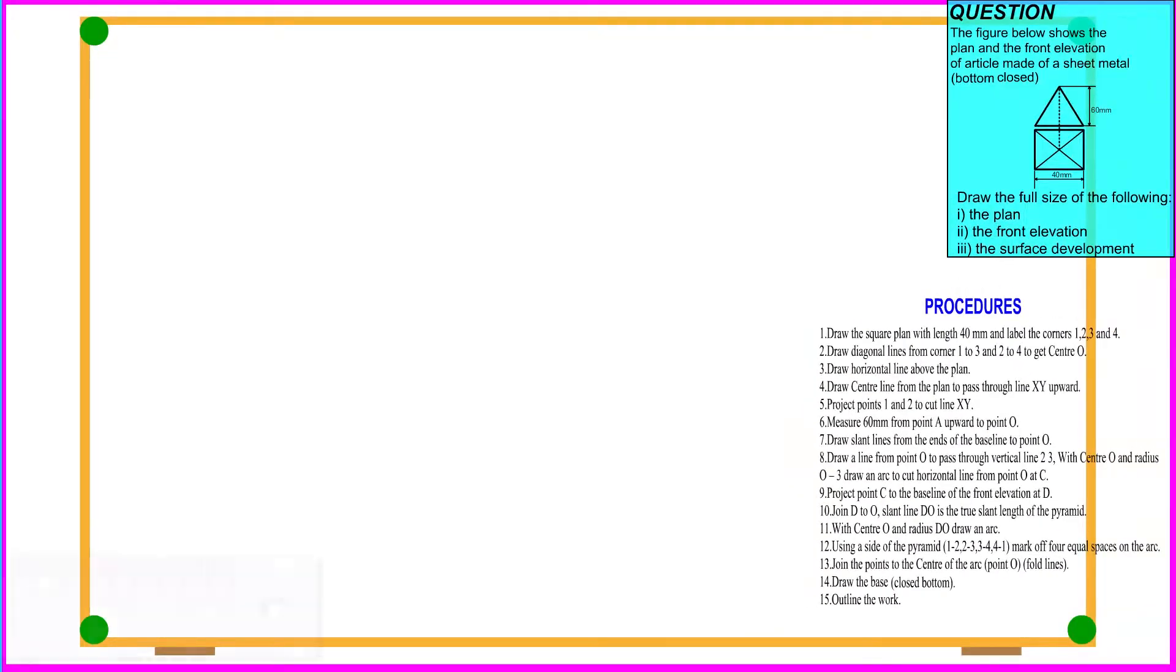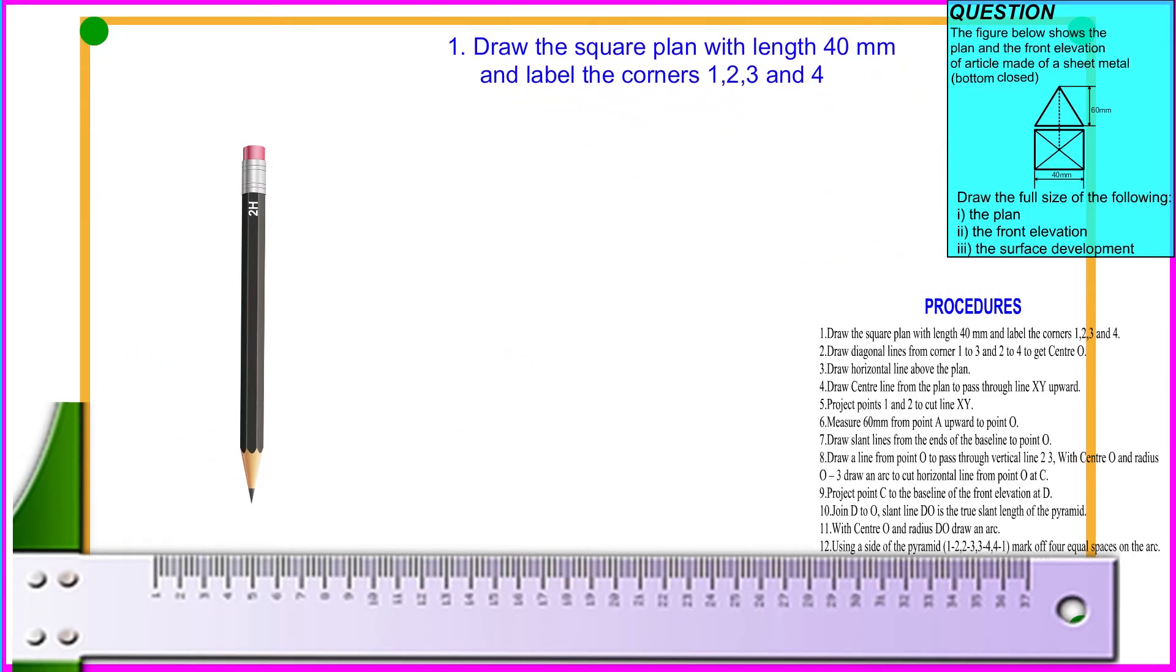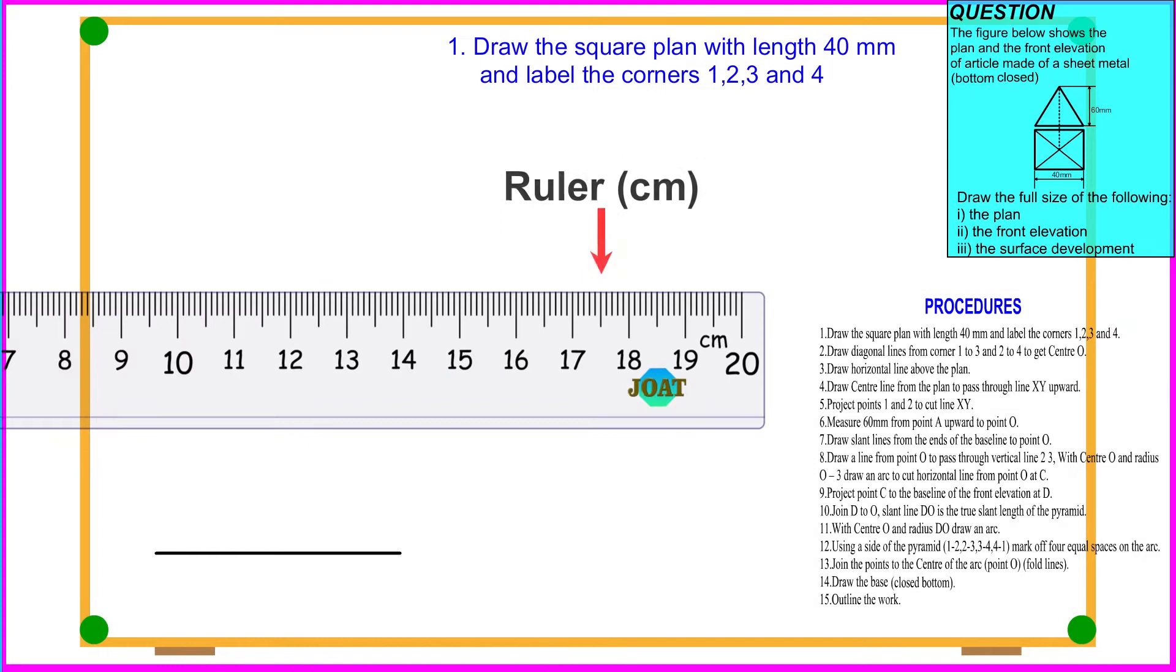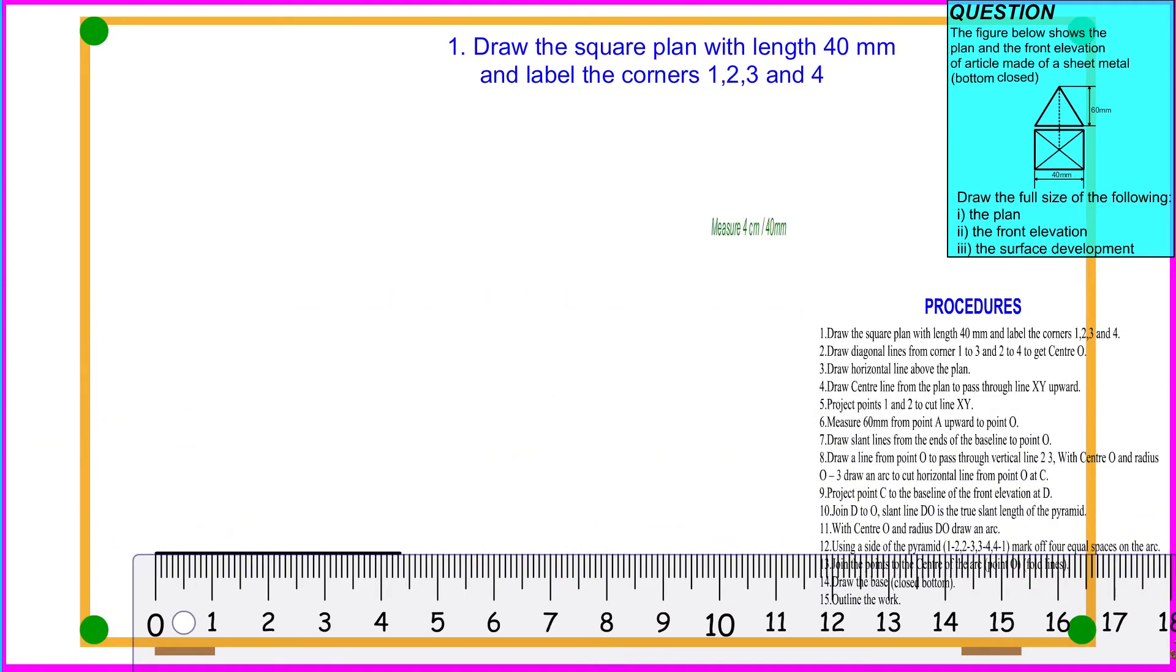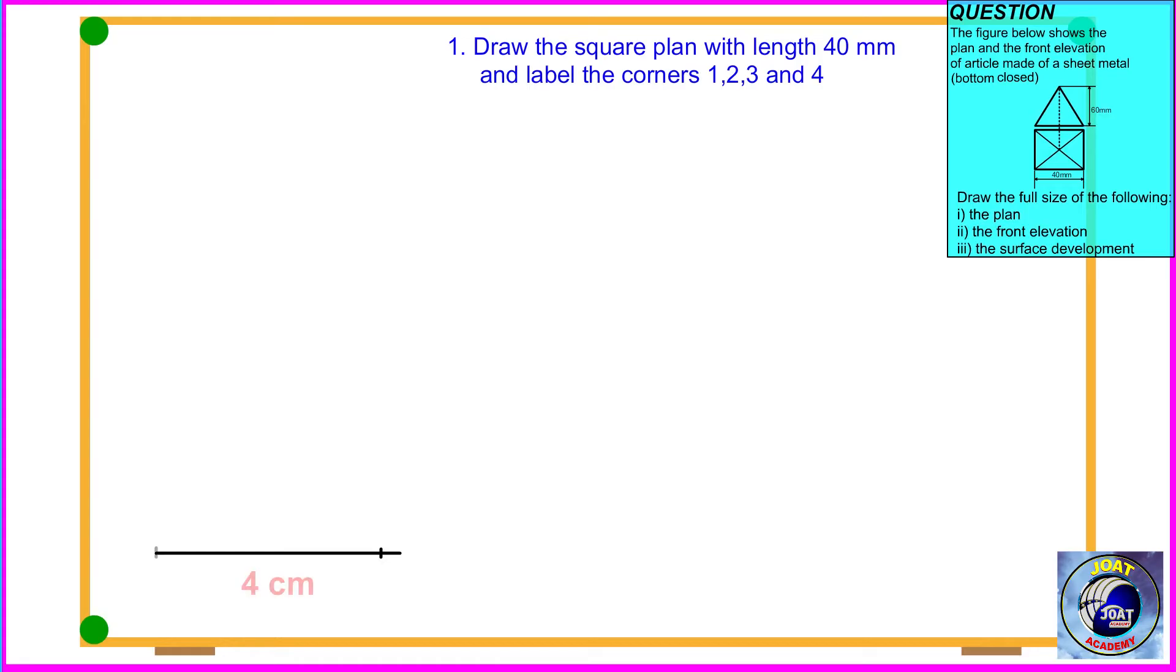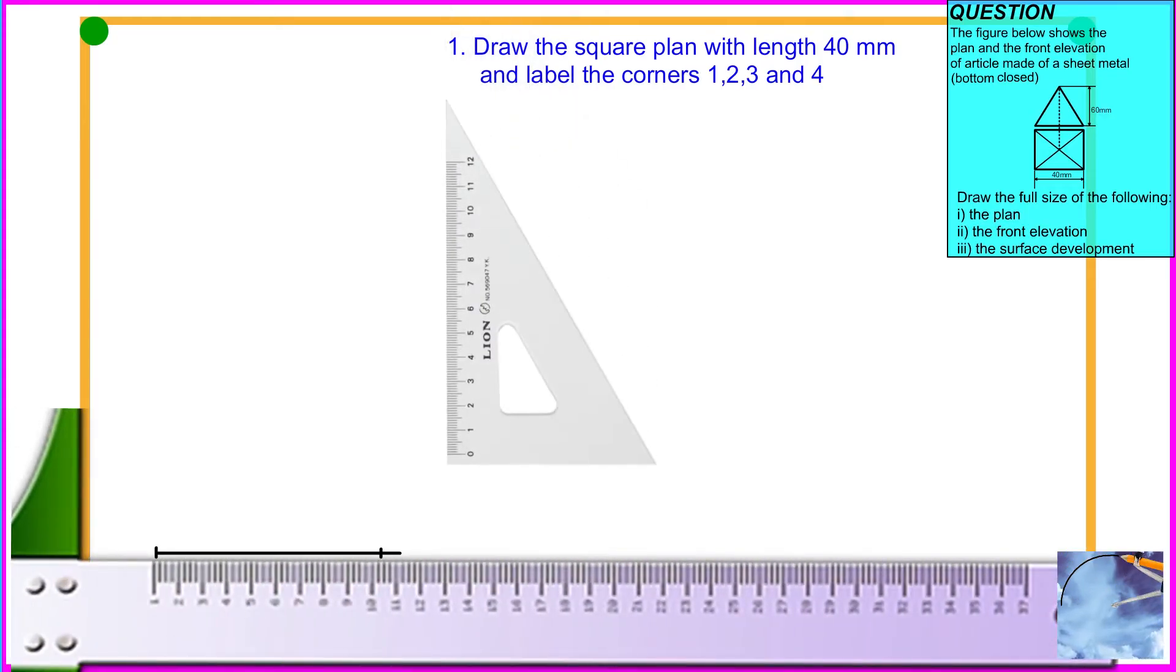T-square, 2H pencil. Procedure 1: Draw the square plan with a length of 40 millimeters and label the corners 1, 2, 3, and 4. Ruler, measure 40 millimeters, set.